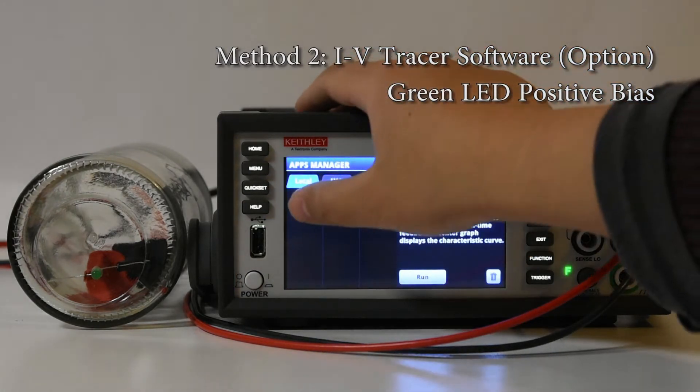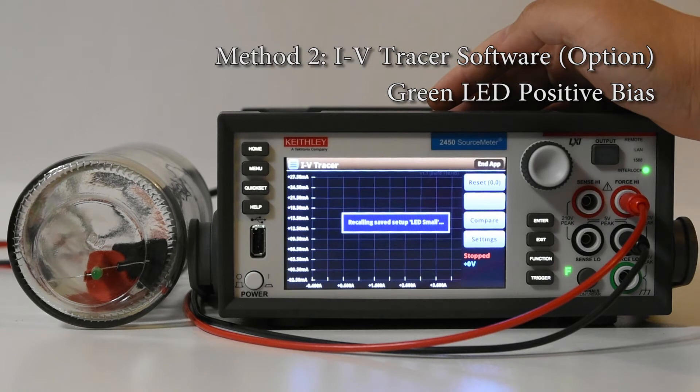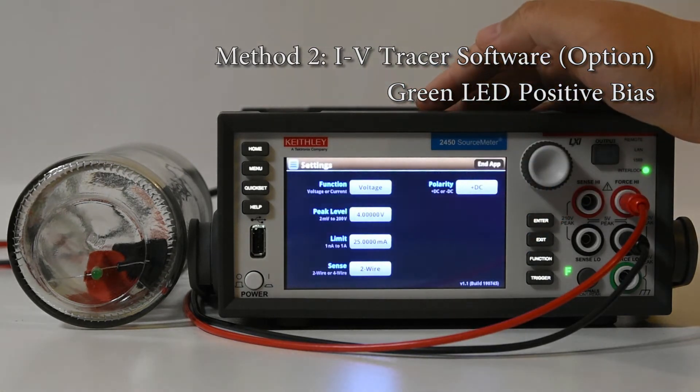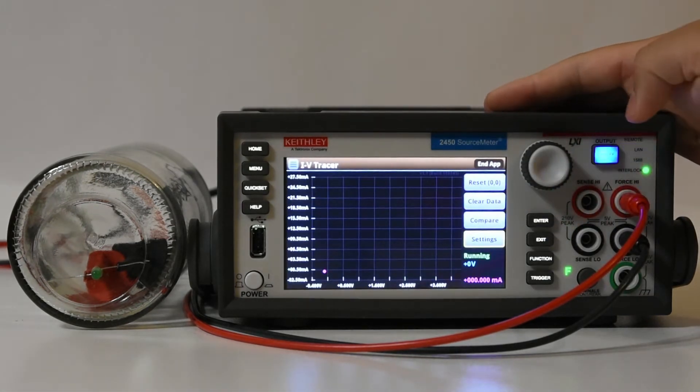The second method requires the IV tracer software license. A trial is available. This is loaded as an app onto the 2450 via the use of the Kickstart software on the PC, but then remains resident on the 2450 itself.